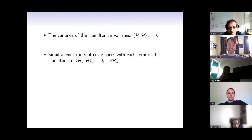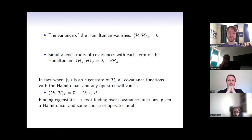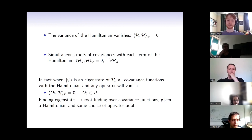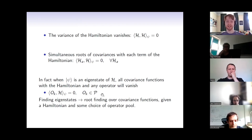We can come up with a series of conditions that guarantee that the state is an eigenstate of a Hamiltonian based on these covariance functionals. We decompose this Hamiltonian into a series of a linear combination of orthogonal elements — basically Pauli strings. The first condition is that the variance of the Hamiltonian vanishes if psi is an eigenstate. The second is that you have simultaneous roots of all covariances with respect to the Hamiltonian and each individual term. And all covariance functions with the Hamiltonian and any other operator in some pool will vanish for all operators in that pool.